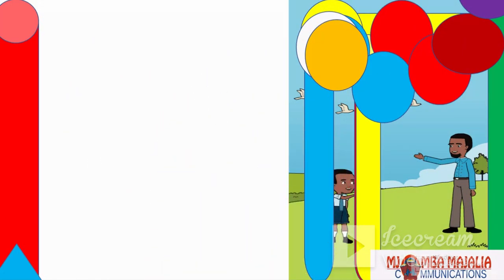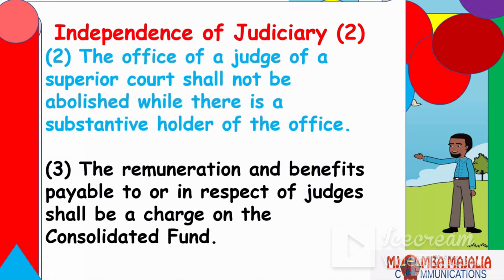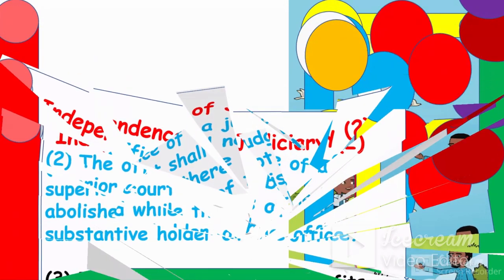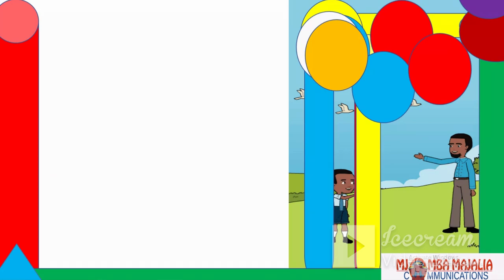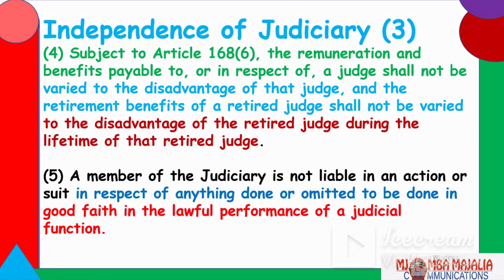In the old Constitution, the president would muzzle the judiciary — it was in the pockets of the president and it was difficult to get justice. But the new Constitution is a good improvement. The office of a judge of a superior court shall not be abolished while there is a substantive holder of that office. In the old Constitution the president could sack or abolish that office, but no longer.